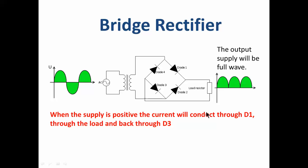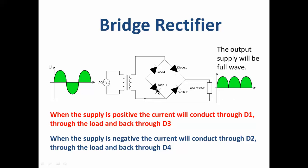So when the supply is positive, the current will conduct through D1, through the load and back through D3. When the supply is negative, the current will conduct through D2, through the load and back through D4.